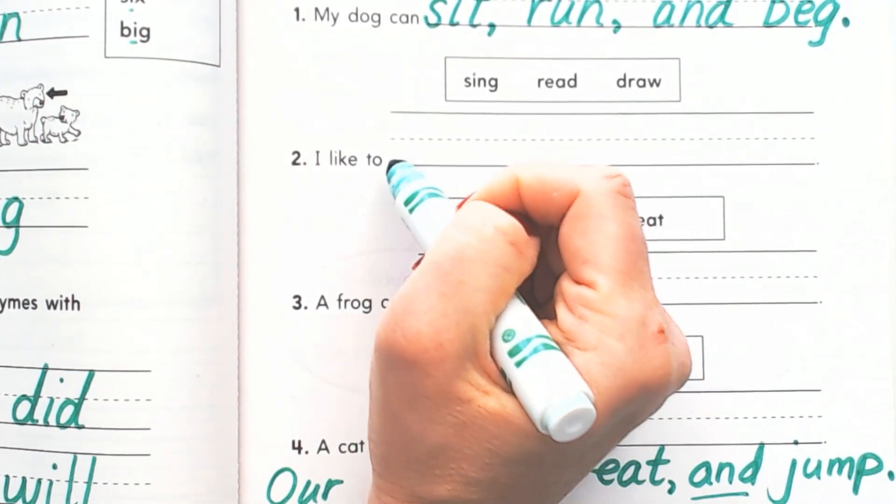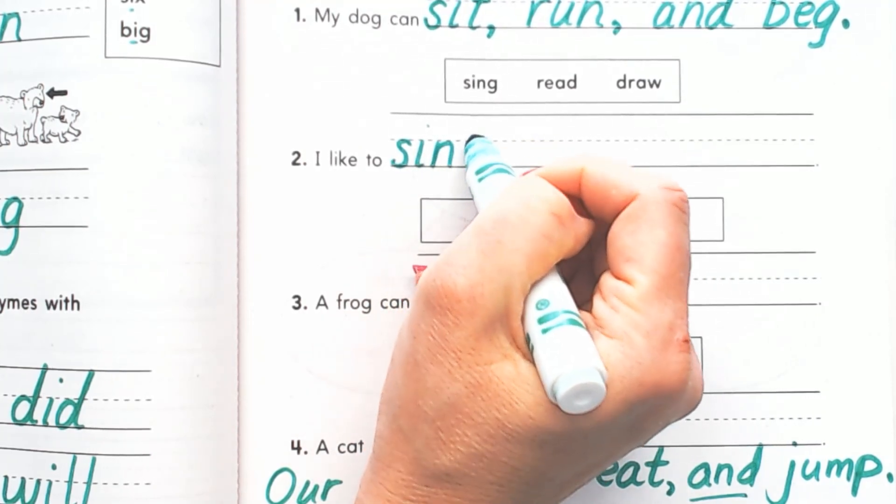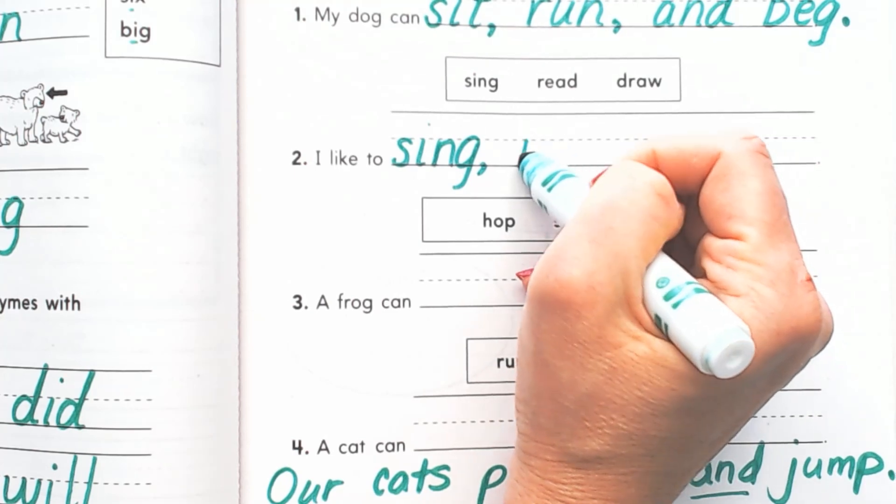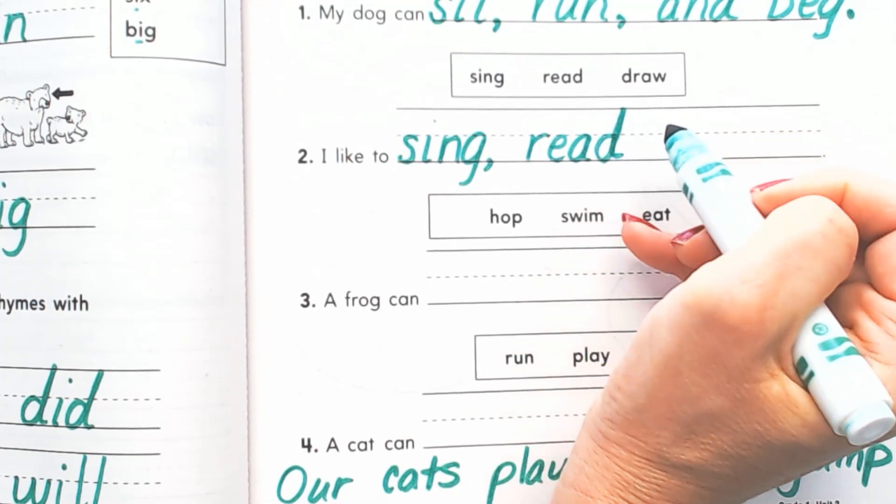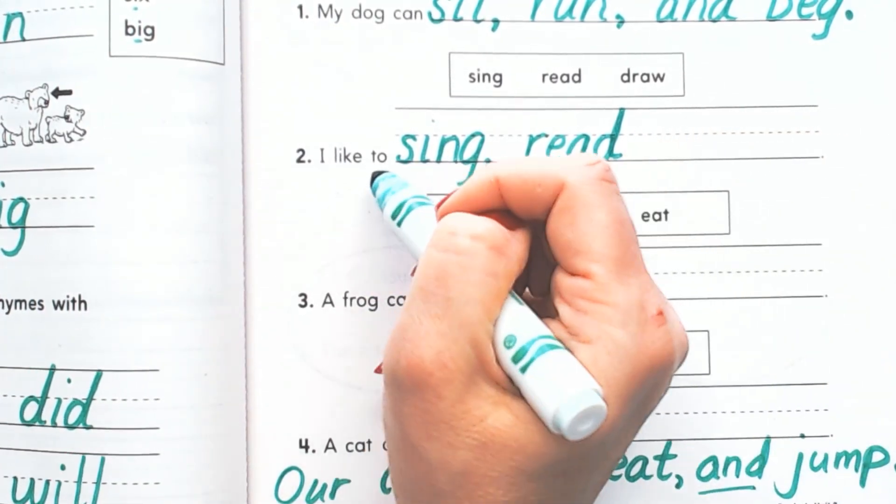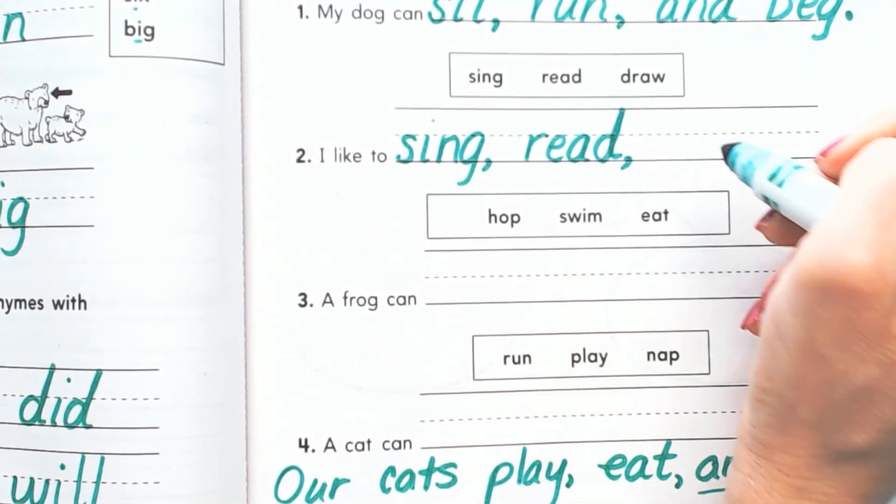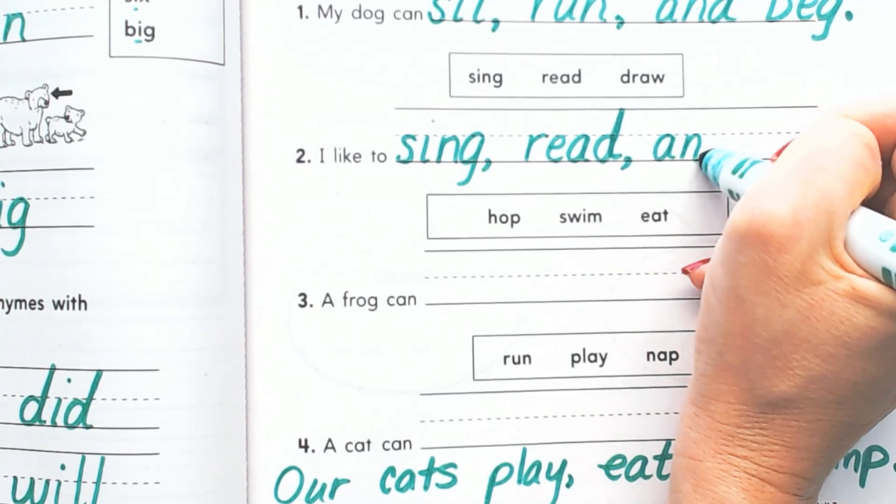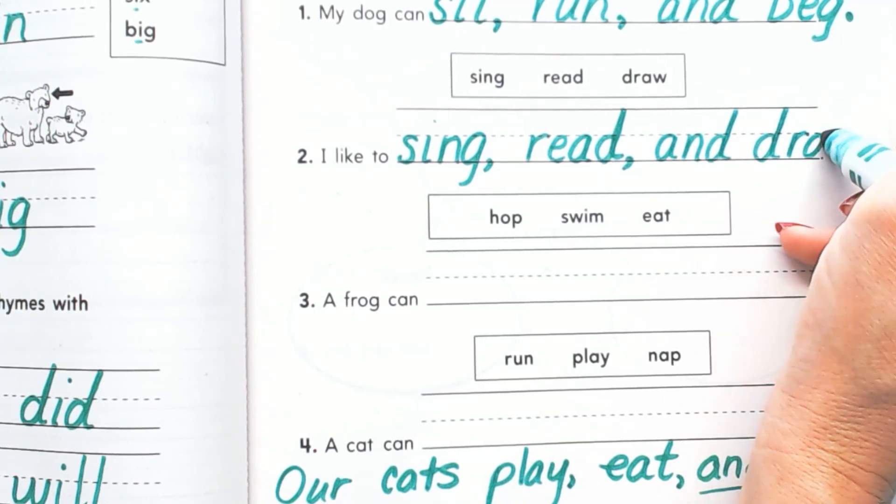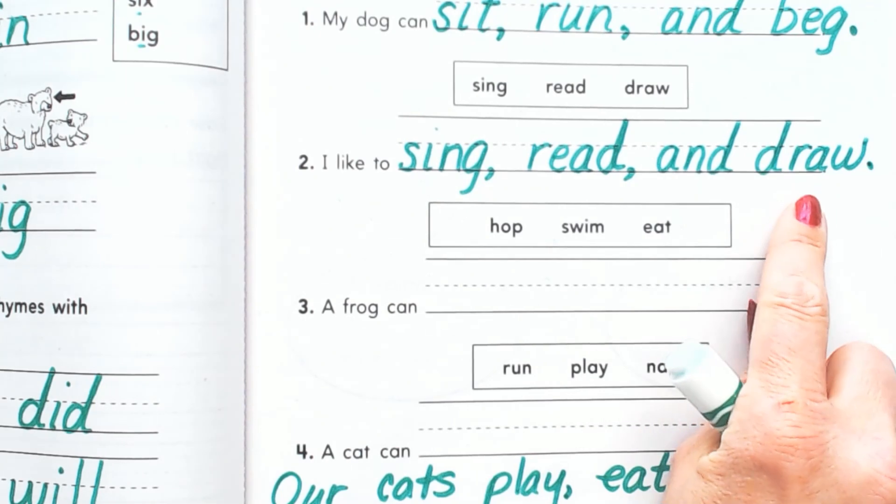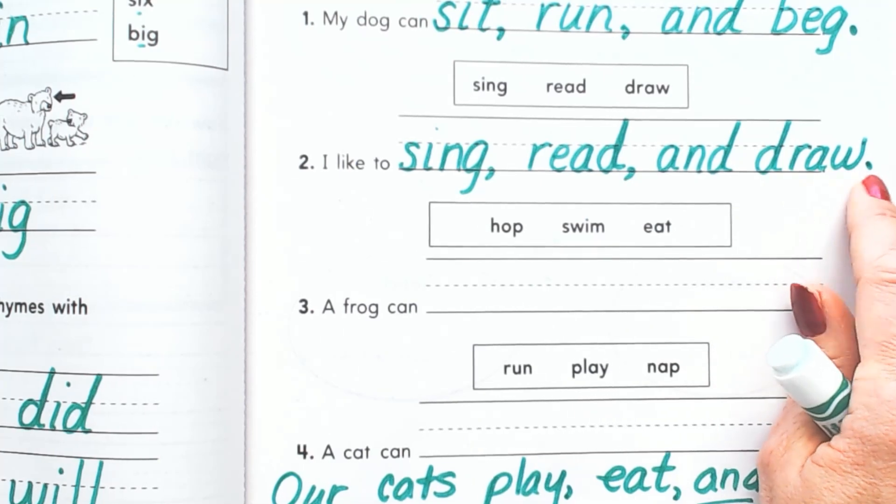I like to, write the three words: sing, comma, finger space, read. I'm writing it super skinny. Can you guys write yours super skinny too? Because it won't fit otherwise. I like to sing, comma with a finger space, read, comma, and draw. We're going to write the word 'and' and the word 'draw.' And again it went past the point where the handwriting lines ended and that's okay. We're just going to be resourceful and use this space over here to finish.